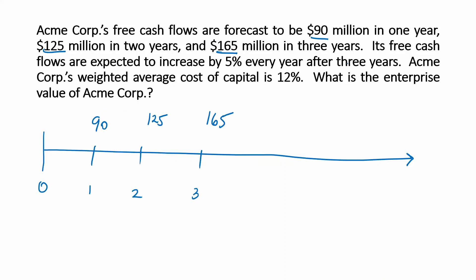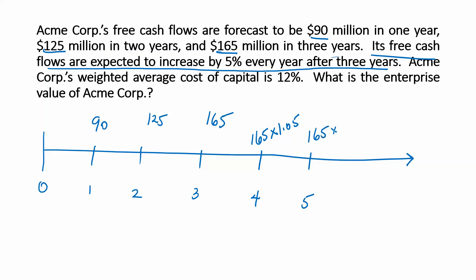Its free cash flows are expected to increase by 5% every year after three years. So that means that the year four cash flow will be 165 times 1.05 — 5% more than year three. Year five would be 5% more than year four, and so on forever.